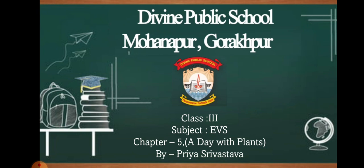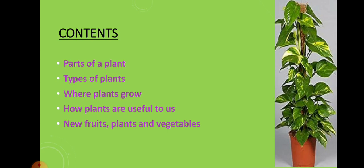In this chapter, we will study about parts of a plant, types of plants, where plants grow, how plants are useful to us, and new fruits, plants and vegetables. So these are the topics which we will cover in this chapter.